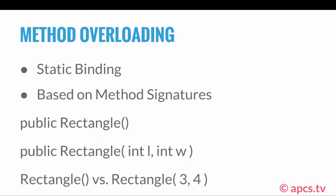Now let's look at method overloading, which is our first example of the concept of polymorphism. Method overloading is also known as static binding, and it is based on method signatures. You'll understand exactly what a method signature is in just a few lines.